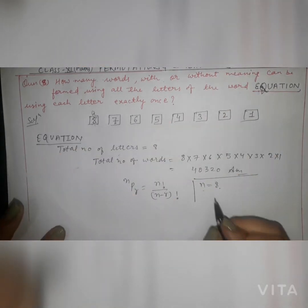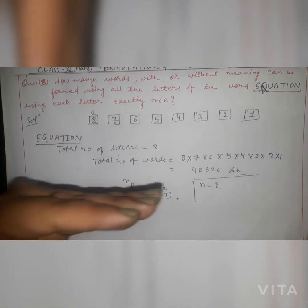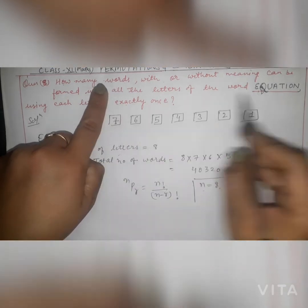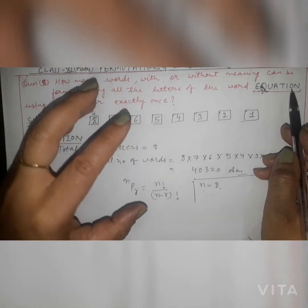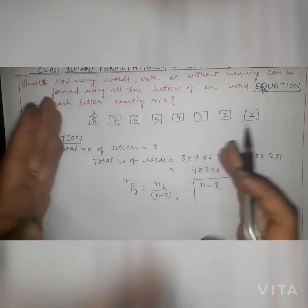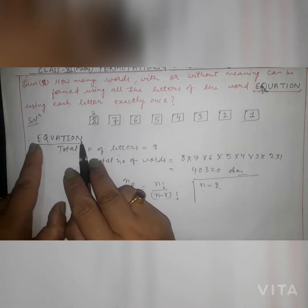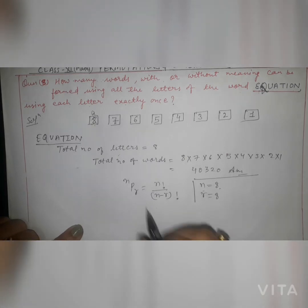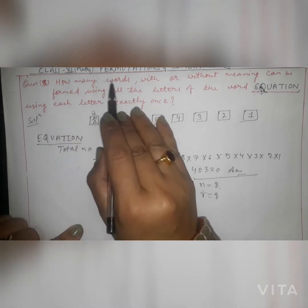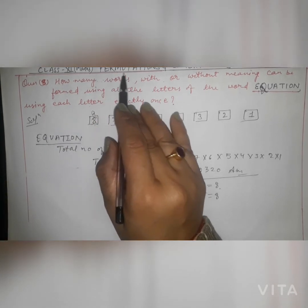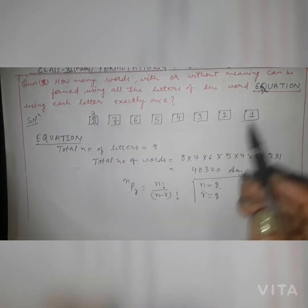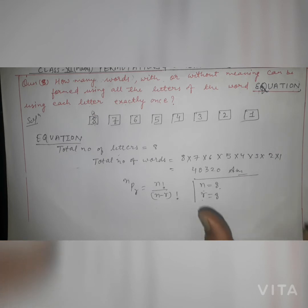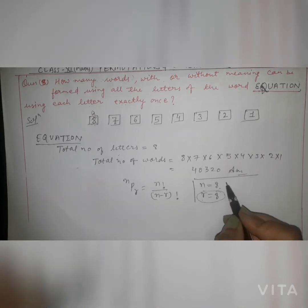N means the total number of items available. In this question, the word EQUATION has letters E, Q, U, A, T, I, O, N — that is 8 letters, so N equals 8. R is the number of letters you want to arrange. Since we are forming words using all 8 letters, R also equals 8.